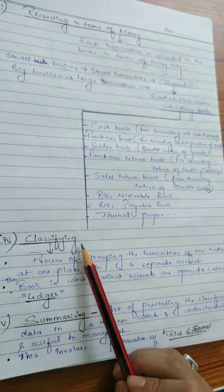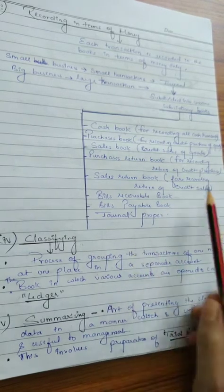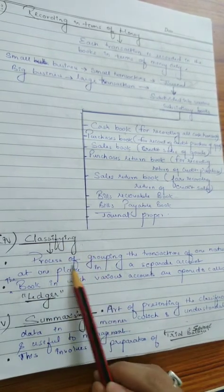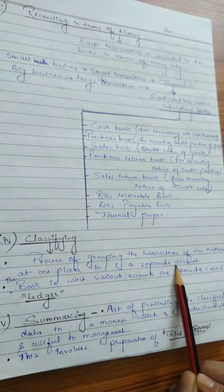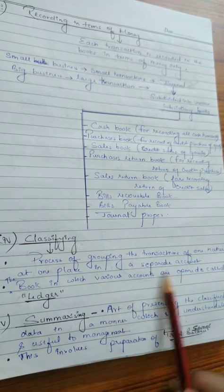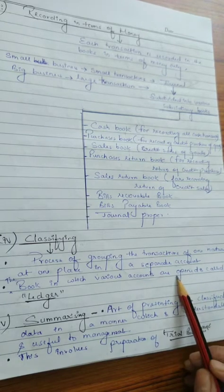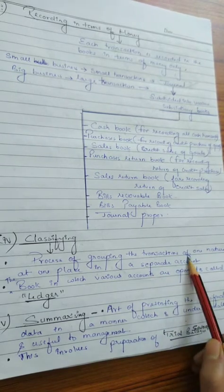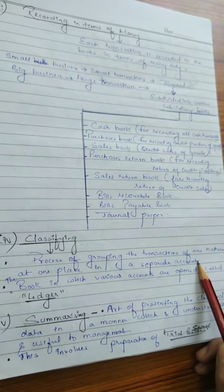The next characteristic is classifying. After recording the transactions in journal or subsidiary books, all the transactions are classified. Classification is a process of grouping transactions of one nature at one place in a separate account. Classification ka matlab hota hai — similar transactions jo ek nature ki hain, woh ek separate account mein record ki jayengi. For example, separate accounts are opened for purchases and sales — purchases-related transactions go to purchases account, sales-related transactions go to sales account.